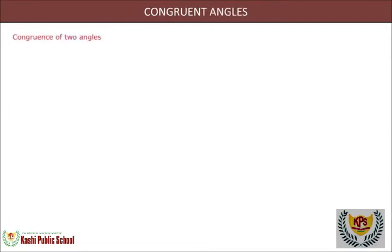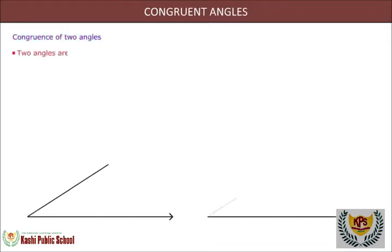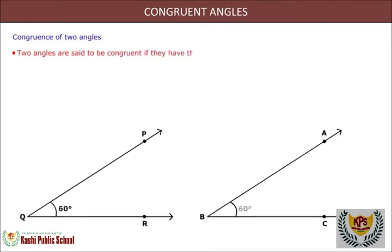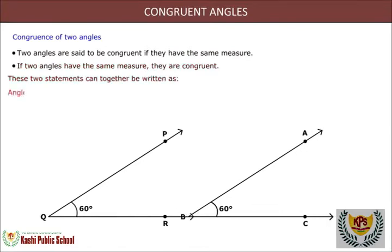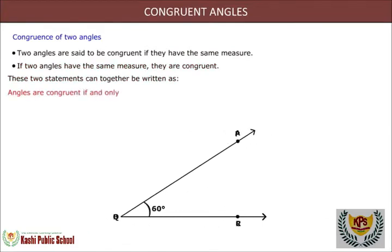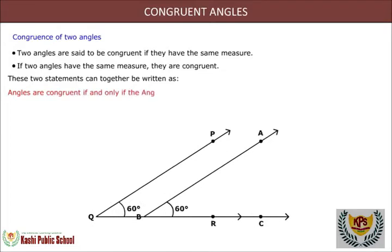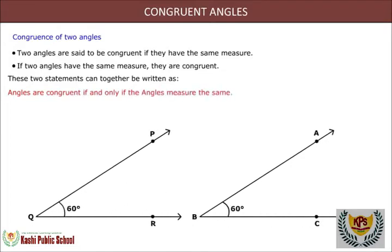Congruence of two angles: two angles are said to be congruent if they have the same measure. If two angles have the same measure, they are congruent. These two statements can together be written as: angles are congruent if and only if the angles measure the same.